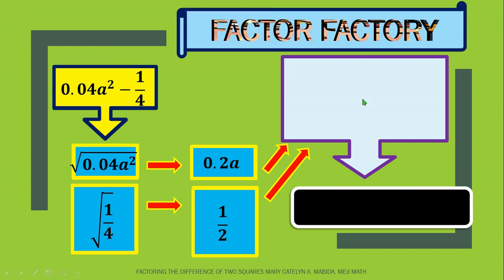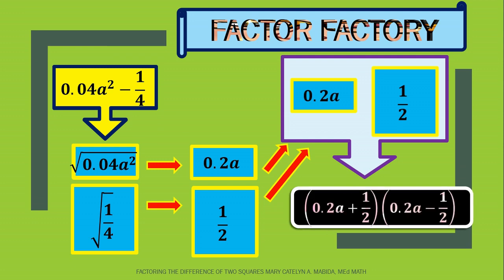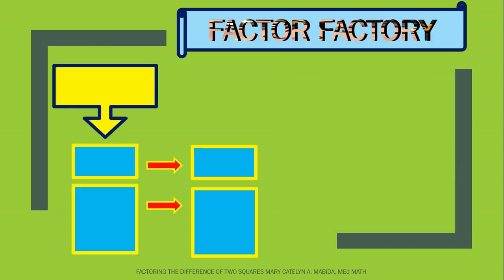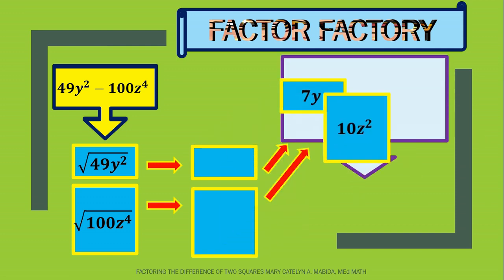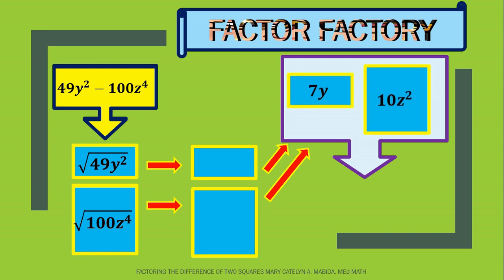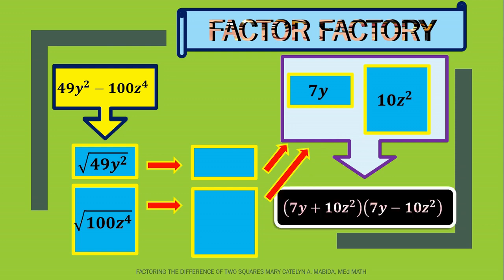Perfect! Now we place our square roots on this box. And there you go! And for the last process, we are going to express these two terms as the sum and difference of two terms. Now let us put another binomial in the factor factory. 49 y squared minus 100 z to the fourth. The first term is 49 y squared. We get the square root. It's 7 y. Now the second term is 100 z to the fourth. And the square root is 10 z squared. Now we place our square roots in this box. We have two terms: 7 y and 10 z squared. And for the last process, we are going to express these two terms as the sum and difference of two terms. It's the quantity of 7 y plus 10 z squared times the quantity of 7 y minus 10 z squared.